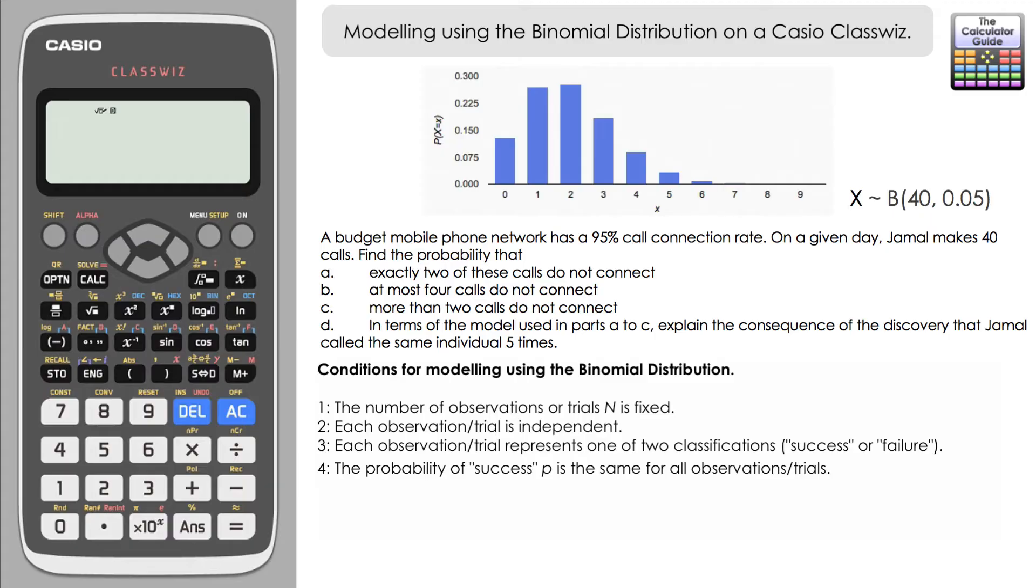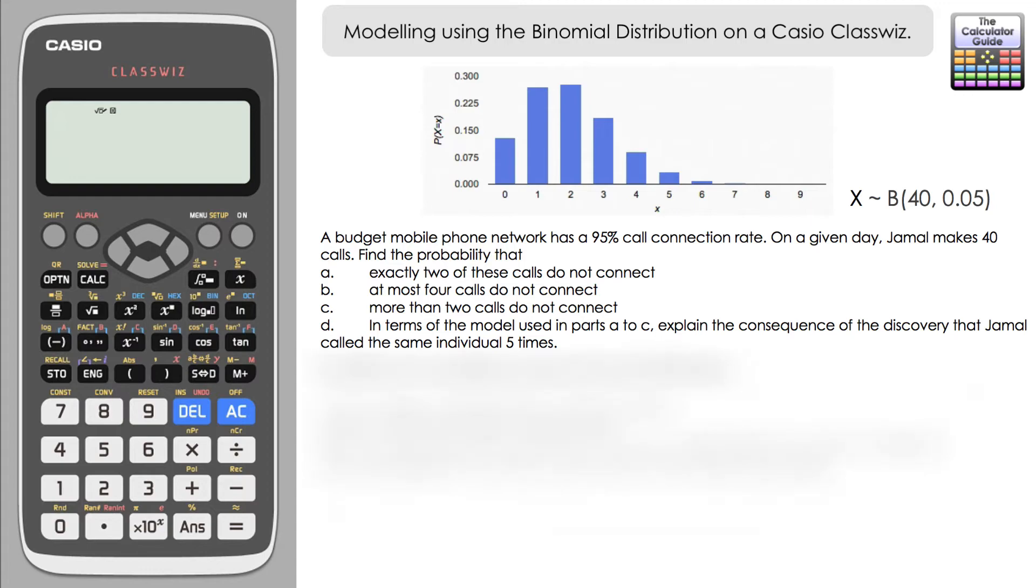And lastly, we need to make sure that the probability is the same throughout each. So yes, the probability of connecting the call is always 95% and therefore not connecting the call is 5% each time. So we are okay to model this with the binomial distribution. So let's go forward and answer the questions.